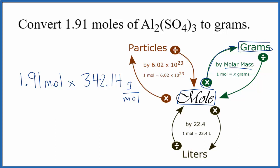Now when we multiply, we have moles on the top and the bottom. We're going to be left with grams, and that's what we're looking for. So we end up with 653.49 grams of Al₂(SO₄)₃.